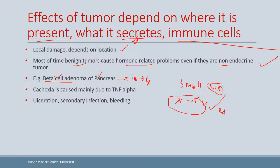Cancer cachexia is the decrease in weight due to loss of fat and lean muscle, accompanied by an elevated basal metabolic rate. The cancer cells initiate an immune response, and macrophages produce TNF-alpha, which is thought to be one of the main causes of cachexia in cancer. Additionally, ulceration and secondary infection can occur when a tumor grows towards a mucosal surface or skin where microbes can infect, and if blood vessels are nearby, bleeding can also result.